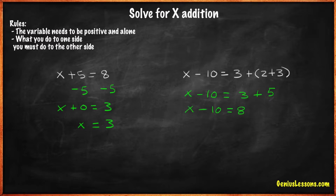Now we can add both sides to 10. Why 10? Because on the left side, we have minus 10, and if we add 10, we will end up with x alone on the left side. x equals 18.